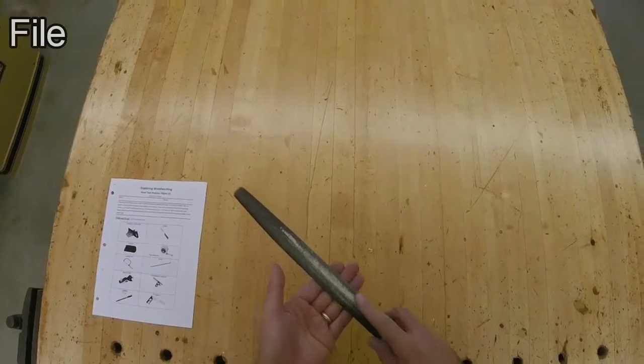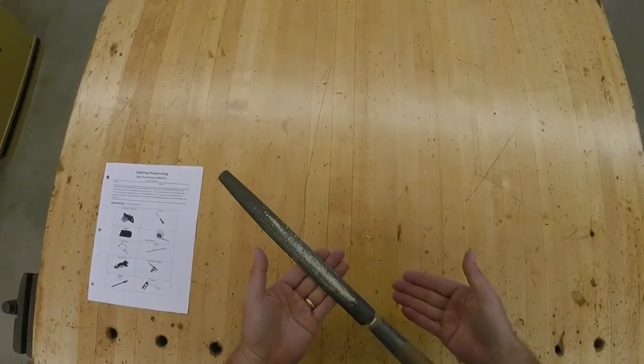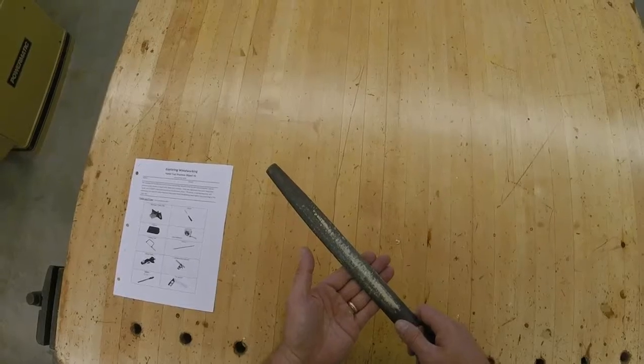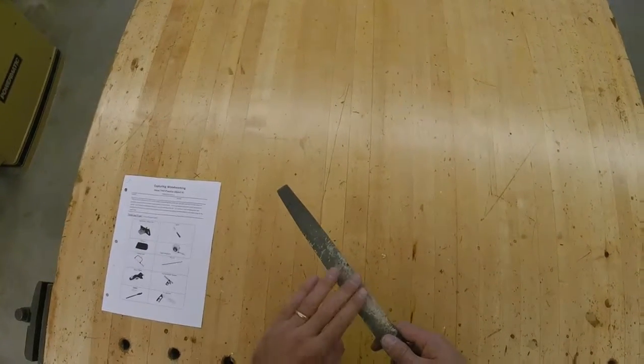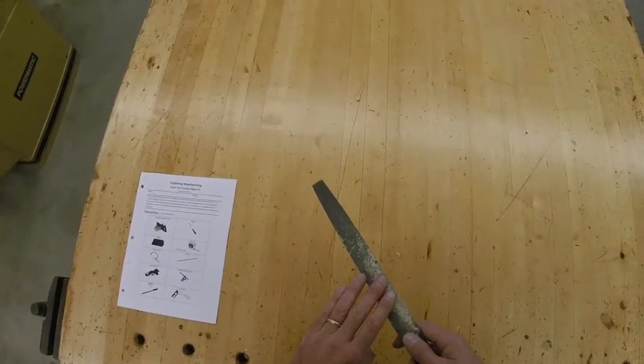What the file is used for is smoothing out surfaces, maybe from a cut you made with a coping saw. This is the step you'd use before sandpaper. It won't leave a smooth surface, but it will remove a lot of wood.